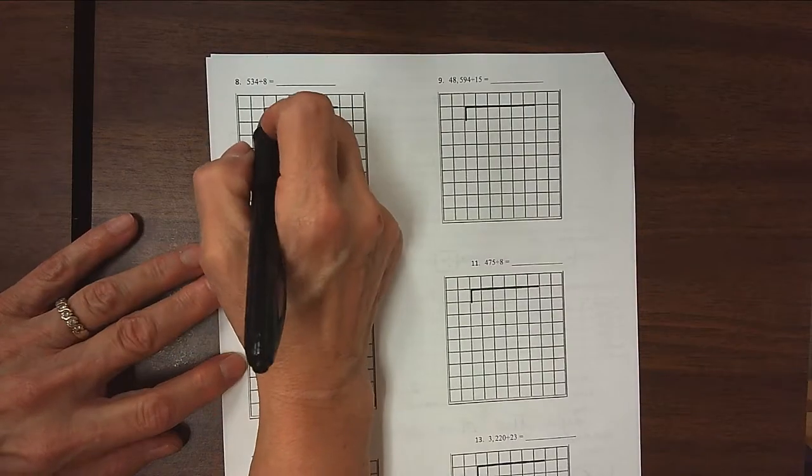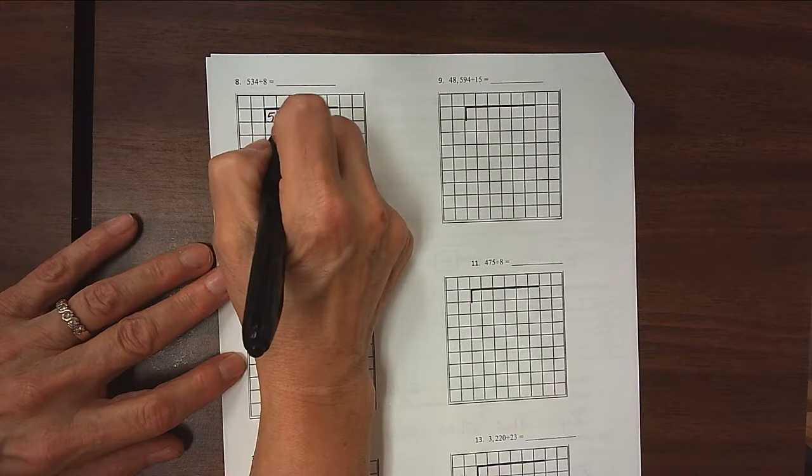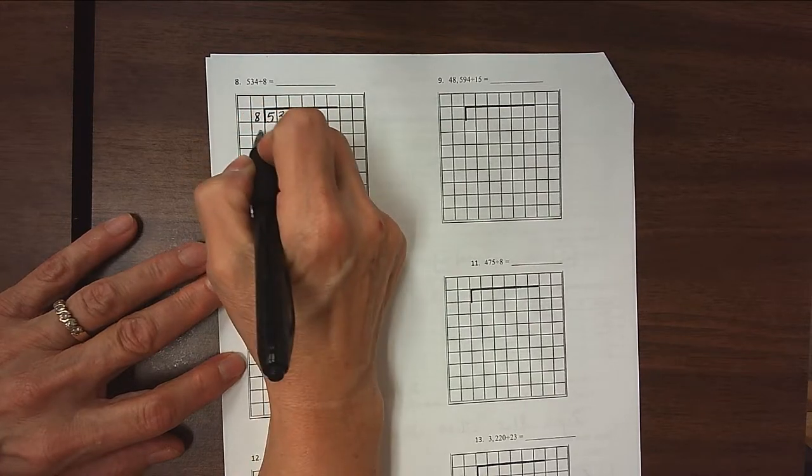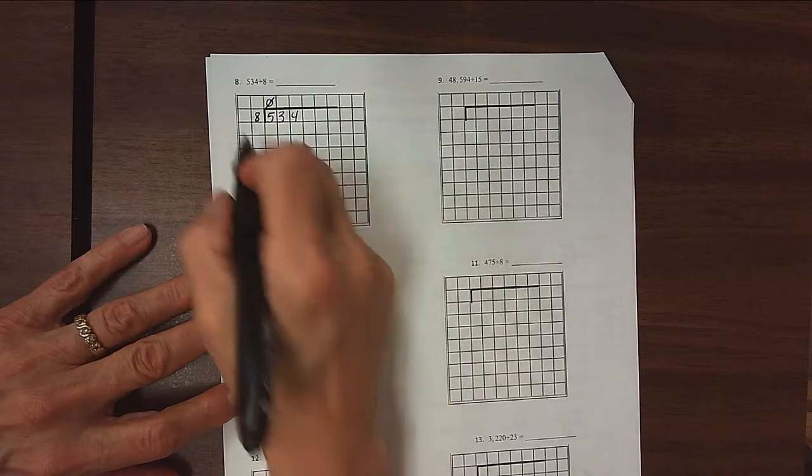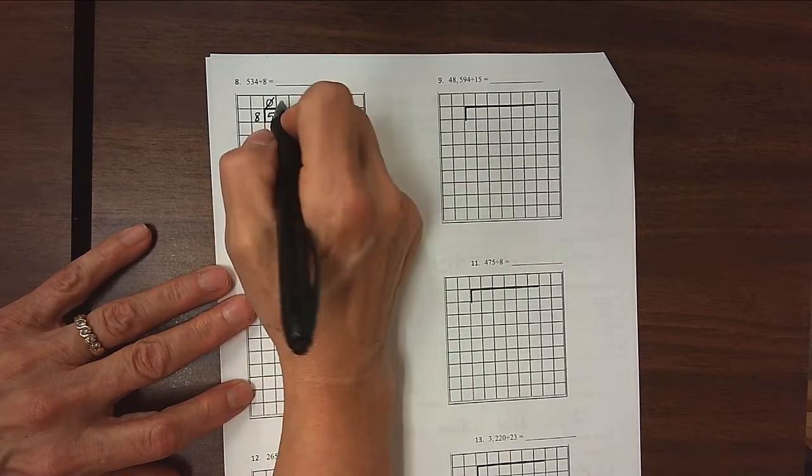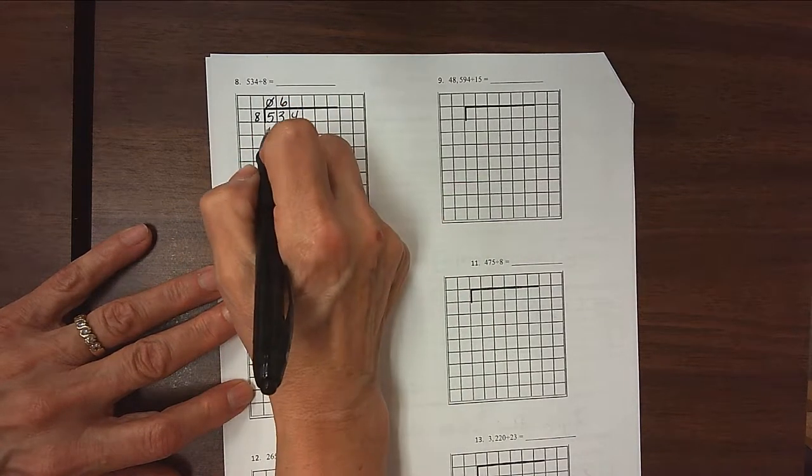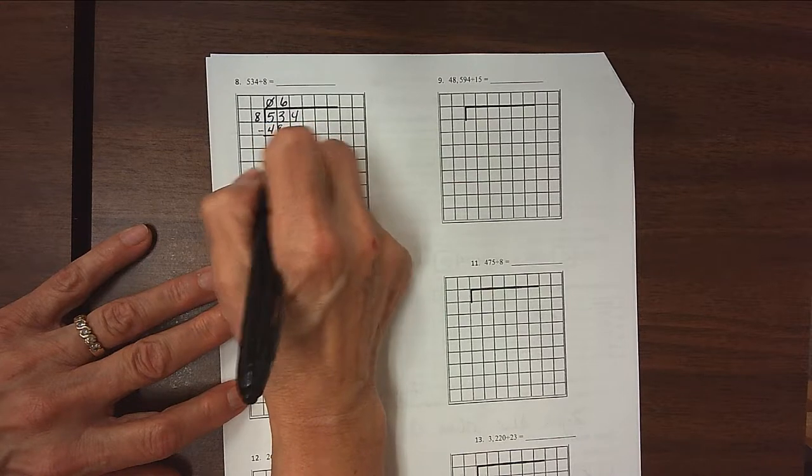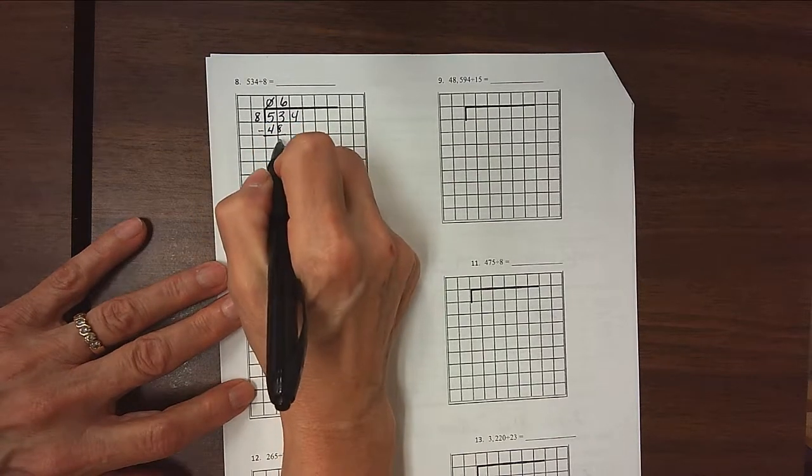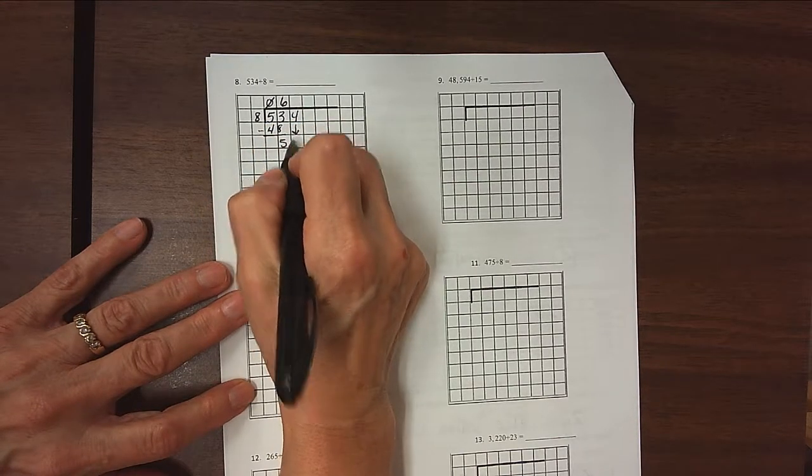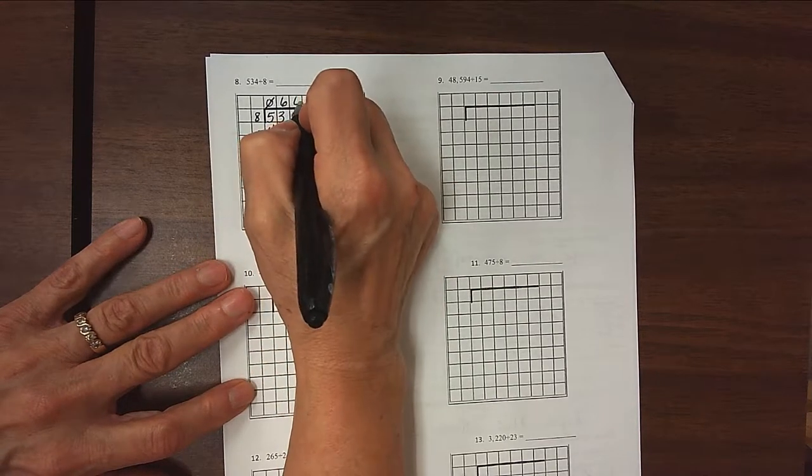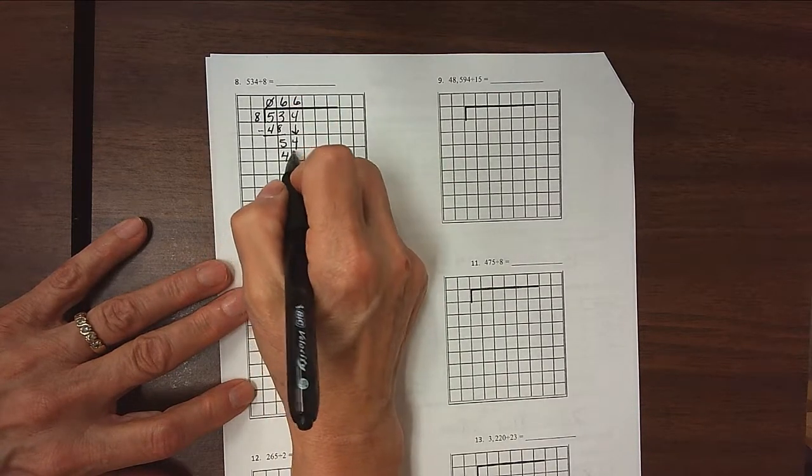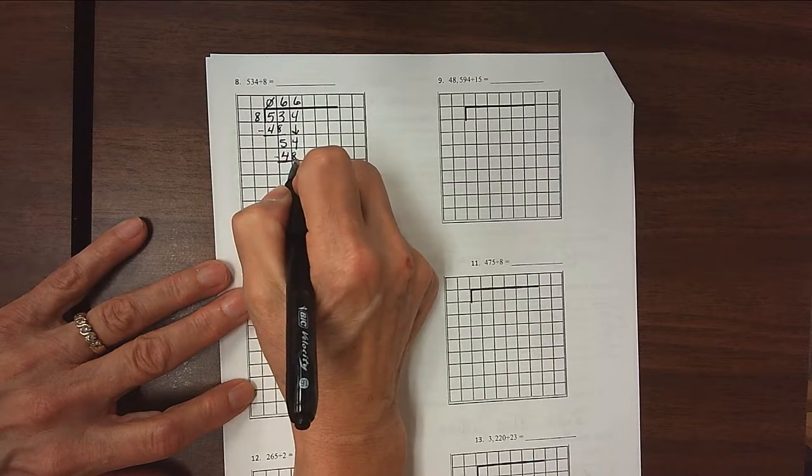So we're going to take 534 here and divide it by 8. 8 doesn't divide into 5, you can put a 0 placeholder up there if you want to. 8 divides into 53 six times because 8 times 6 is 48. We'll subtract 48 from 53, and we get 5, and then we'll bring down our 4. And 8 divides into 54 again 6 times. 8 times 6 again is 48. Subtract, and we get 6.